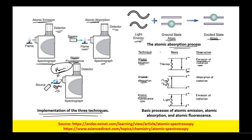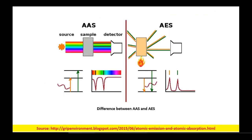In atomic fluorescence, atoms absorb light, go to the excited state, and while coming back to the ground state they emit radiation. In atomic absorption spectroscopy, there is a source emitting a white band of light going through the atomized sample, and at the detector we get dark lines called line spectra.